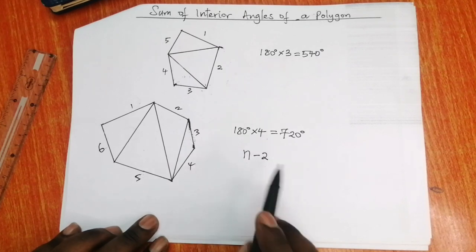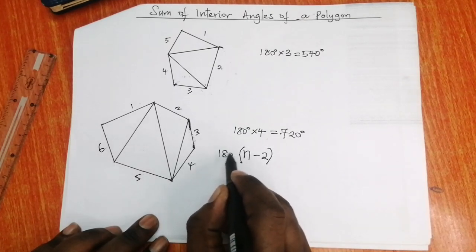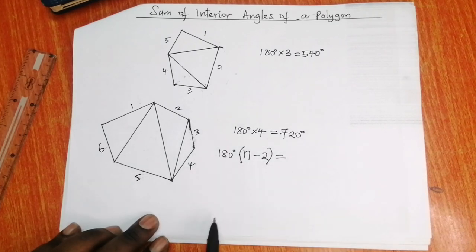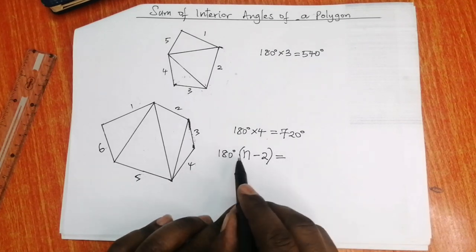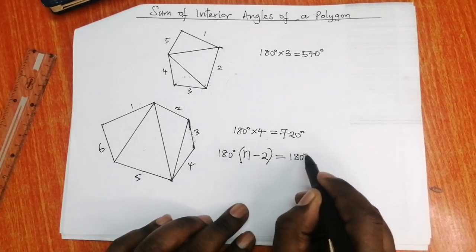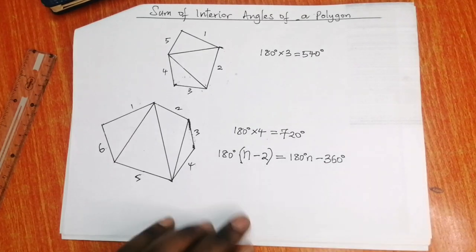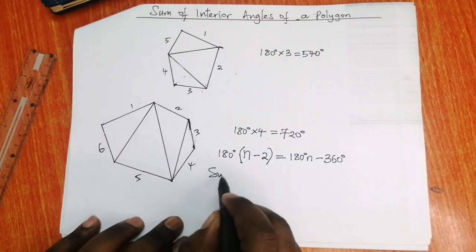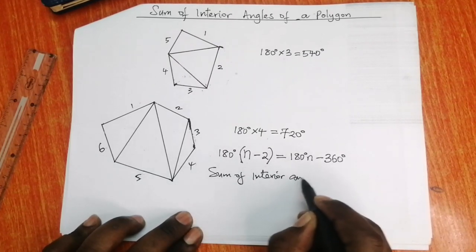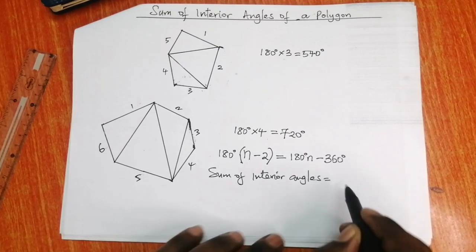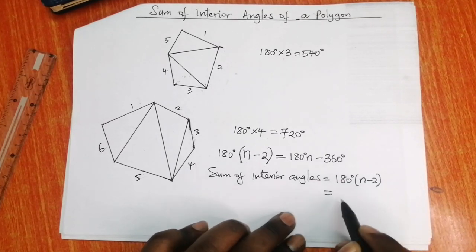When you multiply by 180 degrees, you get the sum of the interior angles of the polygon: 180 degrees times (n minus 2). Expanding the brackets gives you 180 degrees n minus 360 degrees. Therefore, we can say that the sum of interior angles of a polygon is given by 180(n − 2).